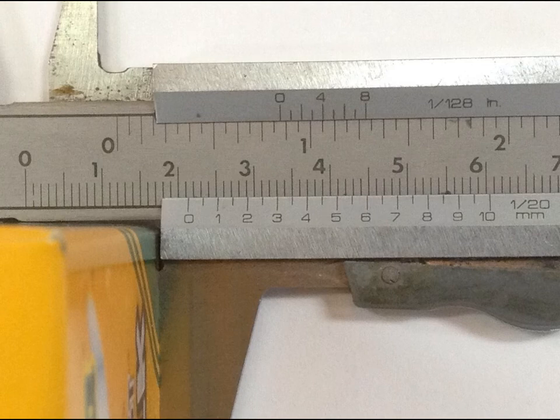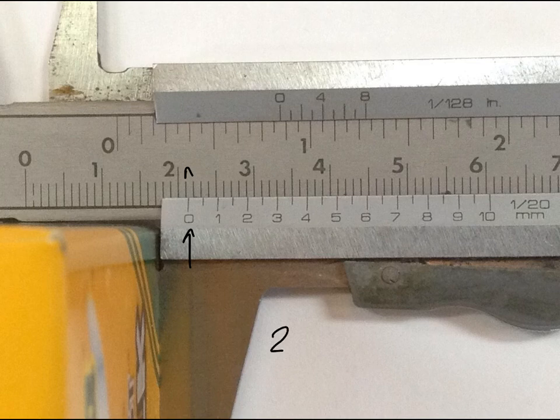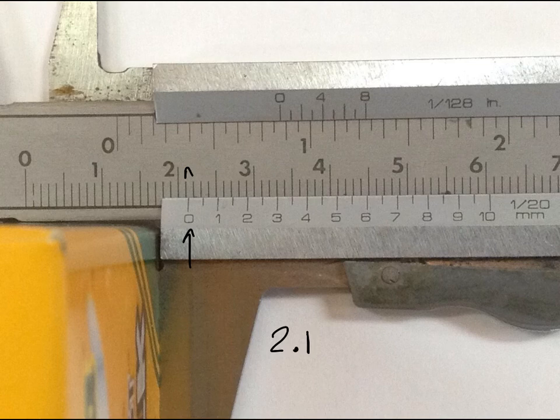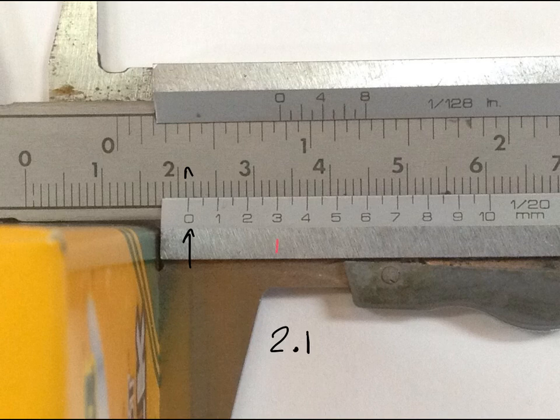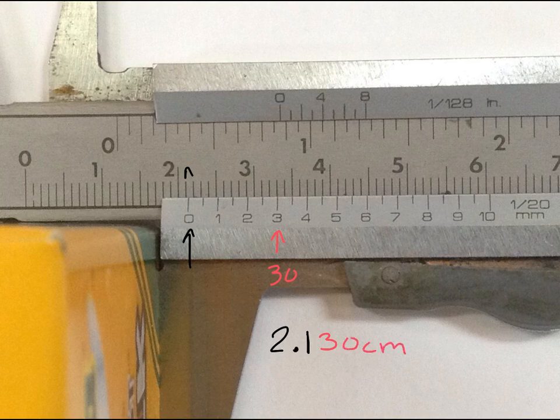Alright. So my measurement, first thing, always look at where the 0 is. 0 is between the 2.1 and 2.2, so it's going to be 2.1. Always want to use the lower side because it's not 2.2, it's closer to 2.1. And then your last two digits come from which one lines up the best? I'm going to say this 3. So it is 2.13, but remember this is actually 30. It'll always end in 0 or 5. So 2.130 centimeters.